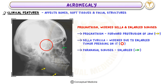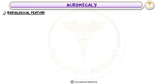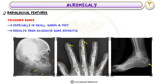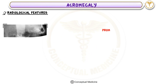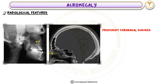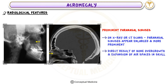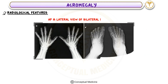Radiological features of acromegaly include thickened bones, especially in the skull, hands, and feet, resulting from excessive bone deposition due to prolonged exposure to growth hormone. On x-ray or CT scans, the paranasal sinuses appear enlarged and more prominent, a direct result of bone overgrowth and expansion of air spaces in the skull.